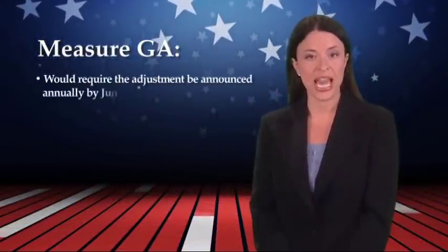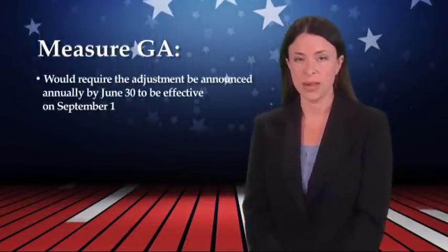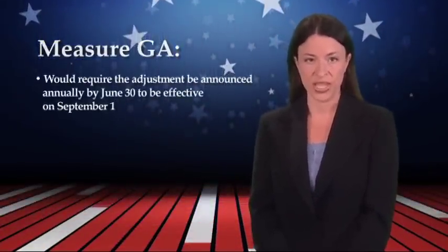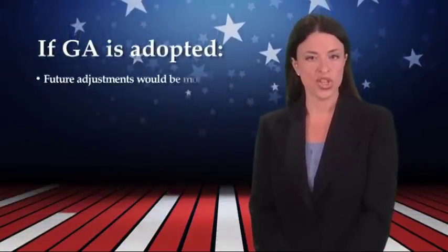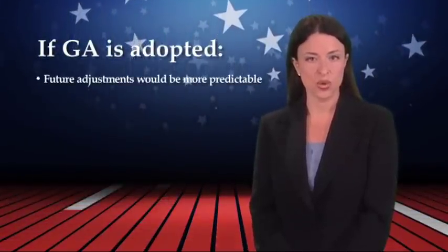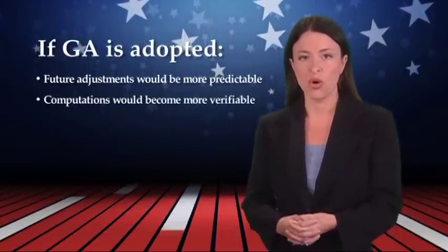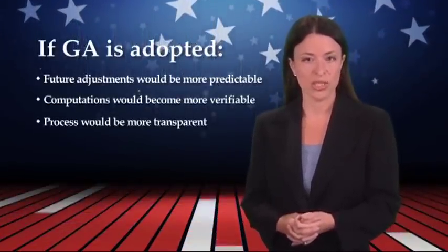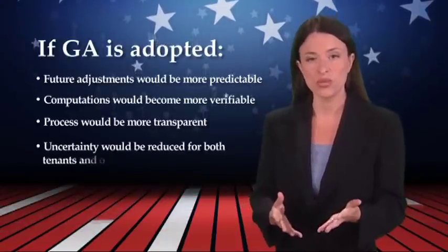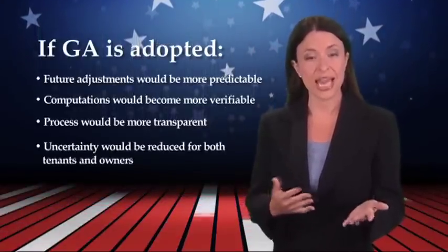It would also require the adjustment be announced annually by June 30th to be effective September 1st. If the measure is adopted, officials say future general adjustments would become more predictable and computations more verifiable. The process would be more transparent and uncertainty would be reduced for both tenants and owners.